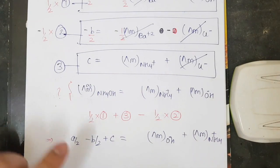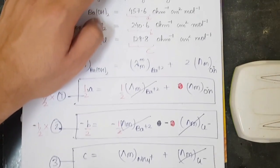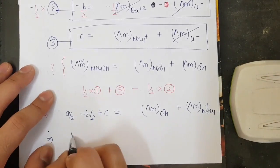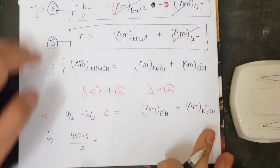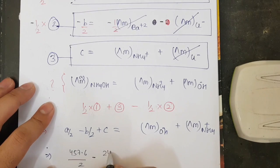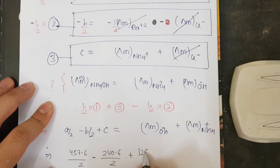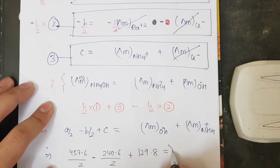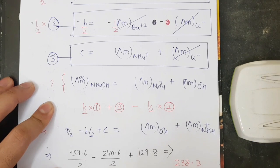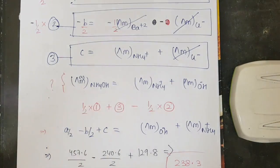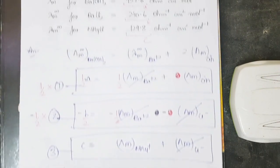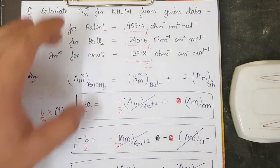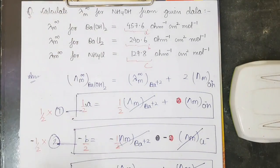Substituting the numerical values: A/2 = 457.6/2, minus B/2 = 240.6/2, plus C = 129.8. The final value comes out to be 238.3 Ω⁻¹ cm² mol⁻¹. This is the answer for λm∞ of NH4OH. This was the hardest level question that can come from this topic — an advanced-level question — so easier ones will definitely follow.